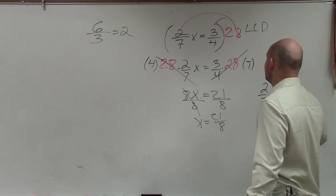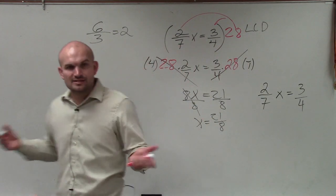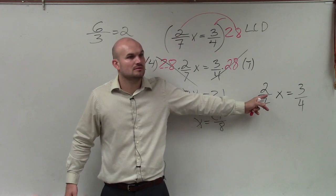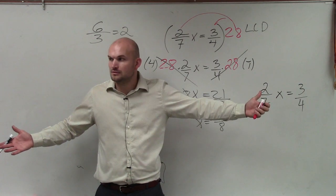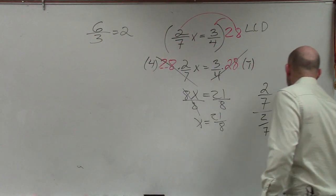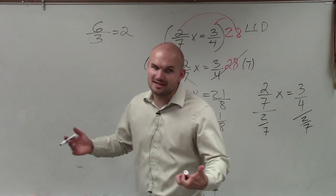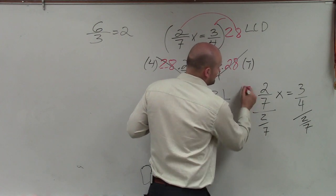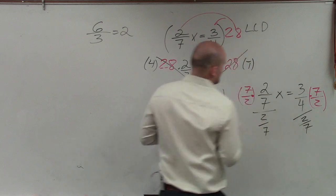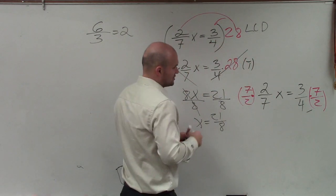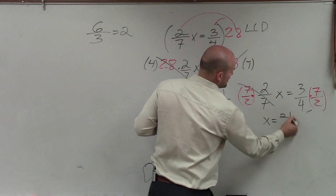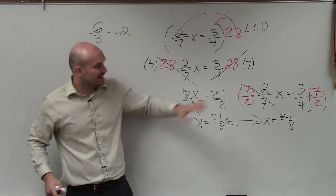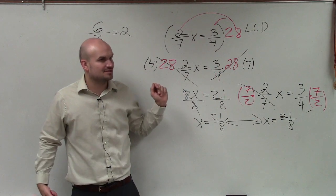The easier method for a one-step equation with fractions is to just look at the operation being applied to our variable. X is being multiplied by 2/7. So we multiply both sides by the reciprocal of 2/7, which is 7/2, and that gives us 1 times x on the left. X equals 3 times 7 is 21, over 4 times 2 is 8 — which is the exact same answer. But again, it will be very important in solving equations to know how to eliminate fractions.